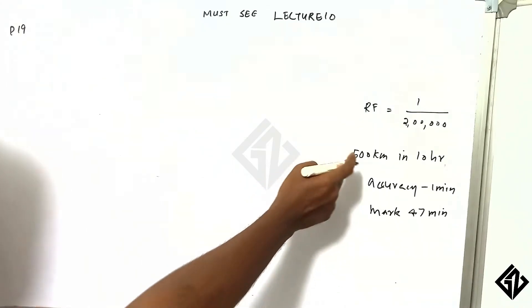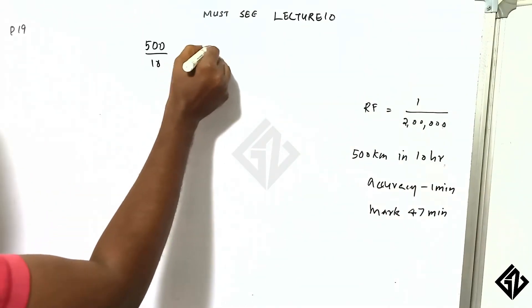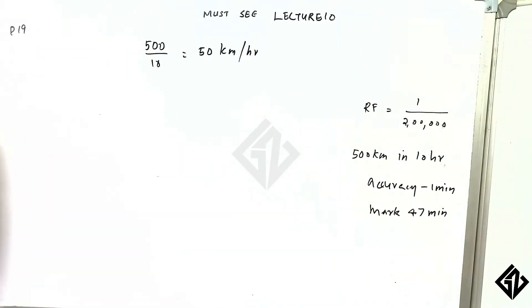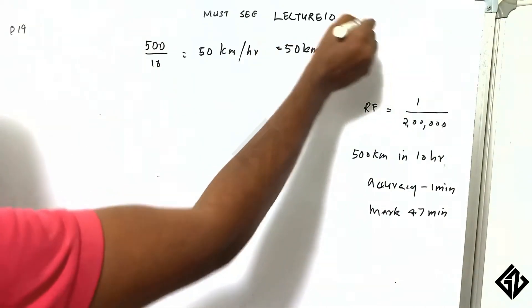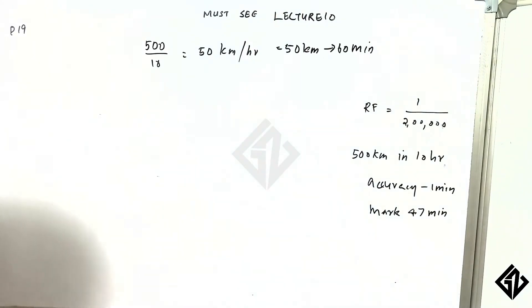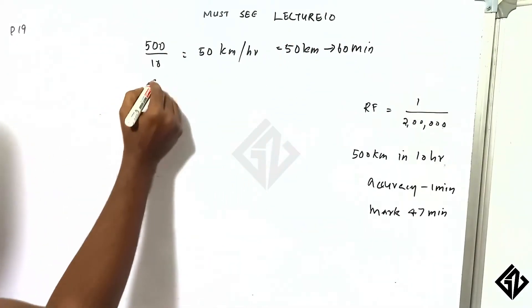In an hour, how much do I travel in a minute? If you travel 60 minutes, it's 50 kilometers per hour.